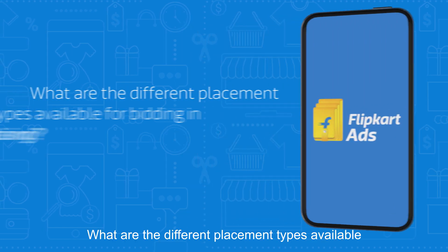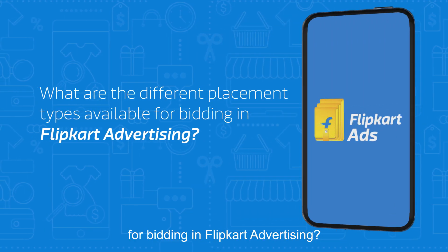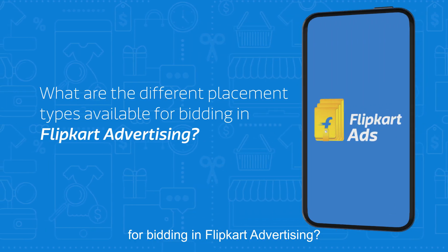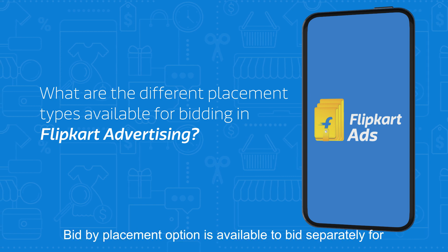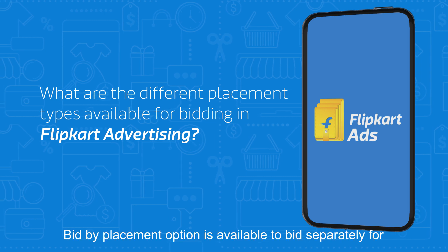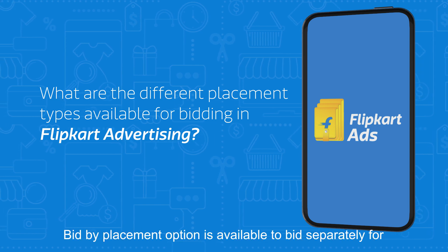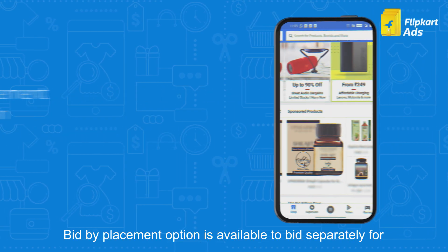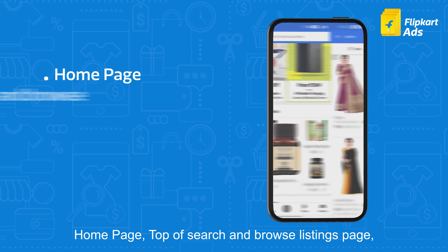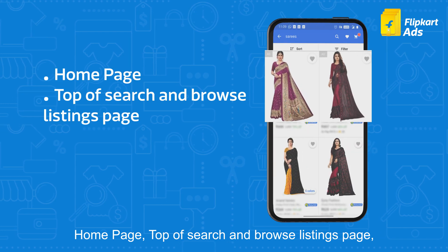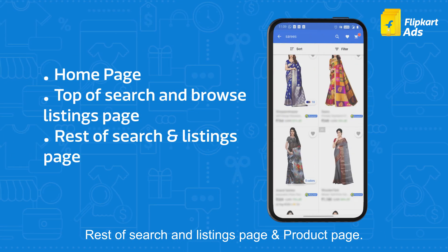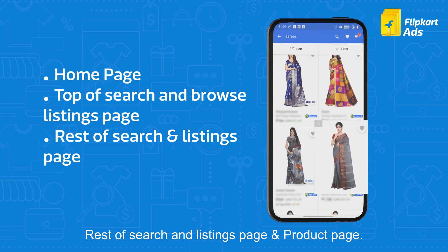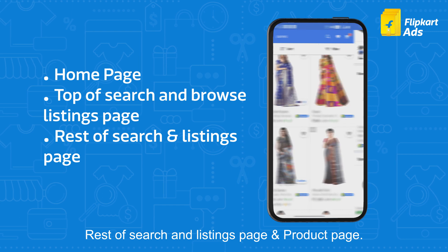What are the different placement types available for bidding in Flipkart advertising? The bid by placement option is available to bid separately for home page, top of search and browse listings page, rest of search and listings page, and product page.